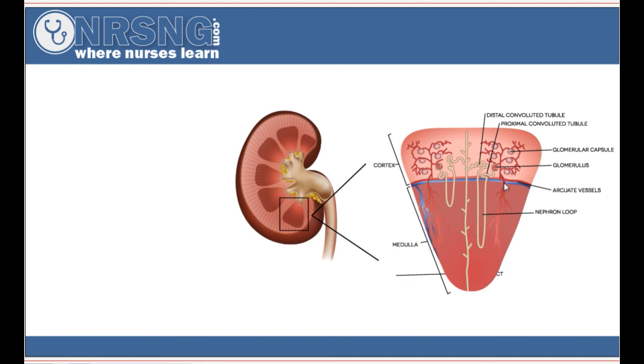So what happens is blood is supplied. It eventually gets to here. And in the glomerulus, some of that blood is filtered. And what is excreted then comes down here through the loop. This is the loop of Henle. And then it is taken out via the collecting duct and then taken to the ureter and is excreted via the urine. So that's kind of how that all works there within the kidney.